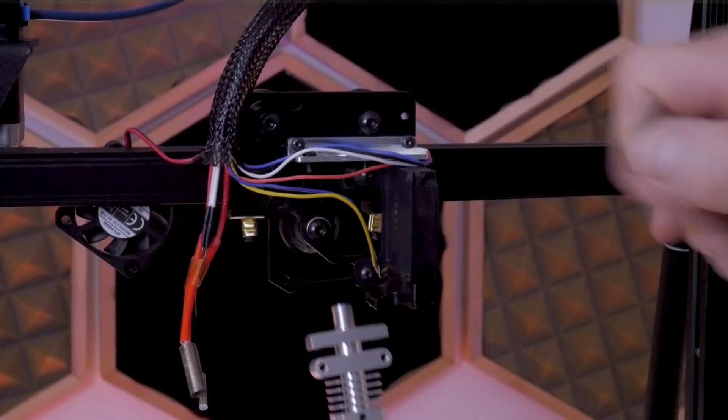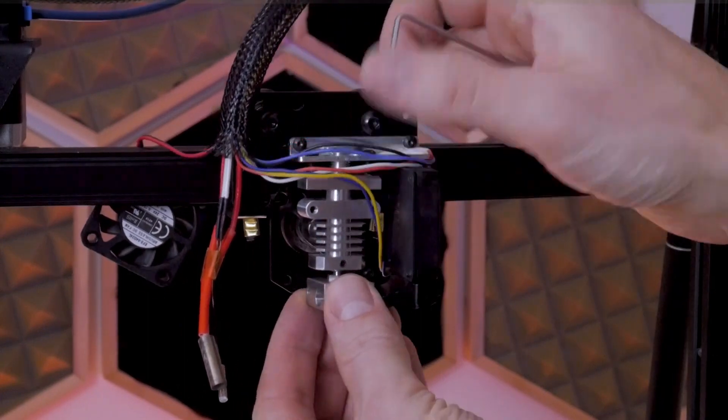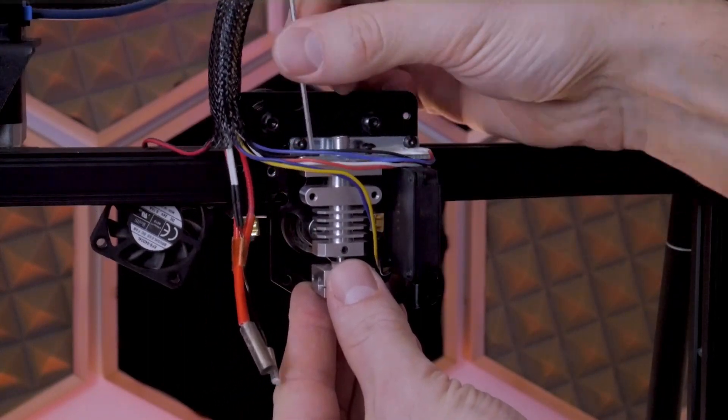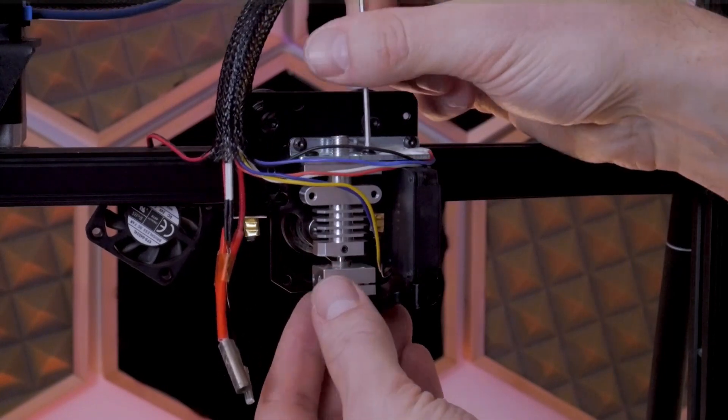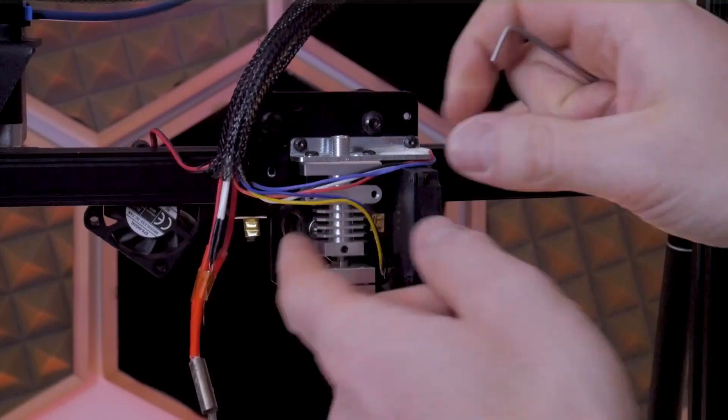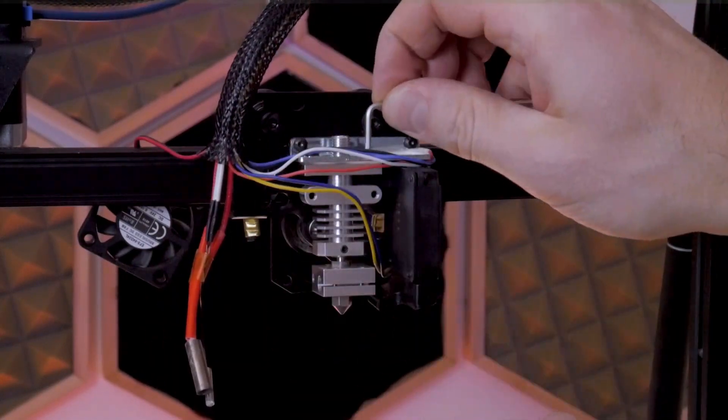The new all-metal hot end can now be fixed back onto the strain gauge bracket using the original two M3 button head cap screws. The holes should line up because, as I mentioned earlier, the CR10 Smart and CR6 SE can interchange some parts.